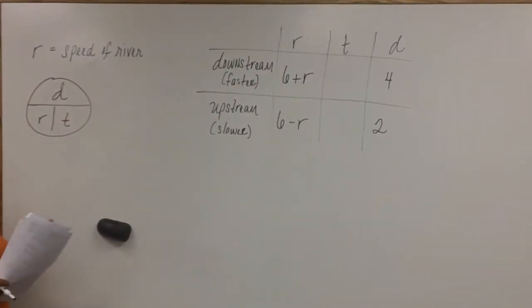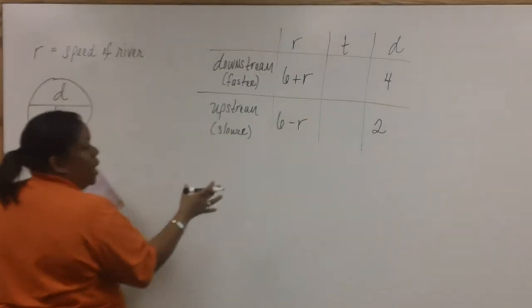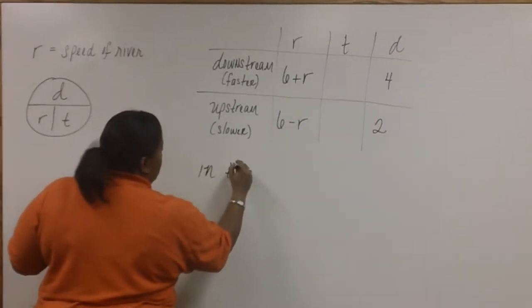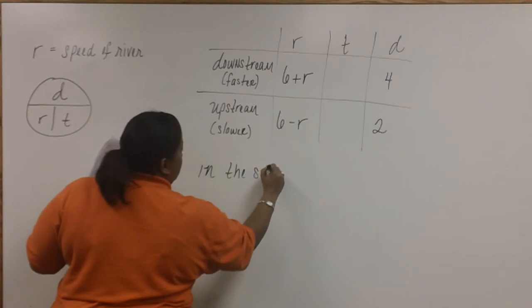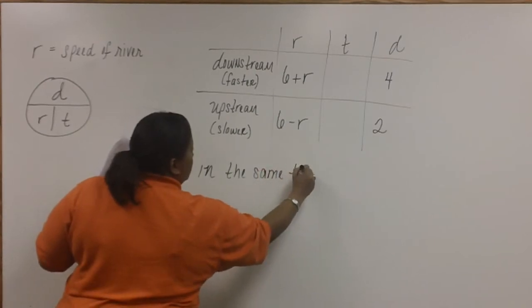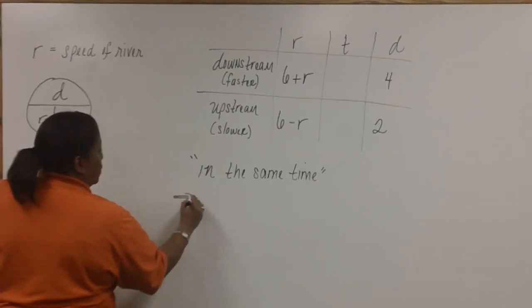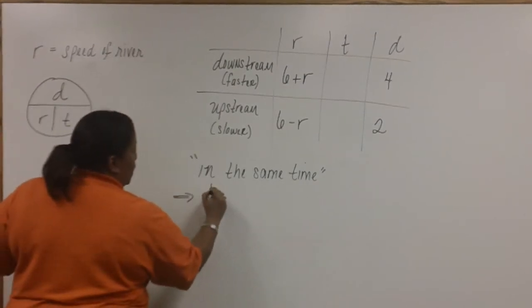Now, there's a very important phrase in this problem that helps us to set this up. So, if you have a highlighter, highlight the part where it says, in the same time. What that means is that the times will be set equal. So, this phrase, in the same time, means that the times will be equal.